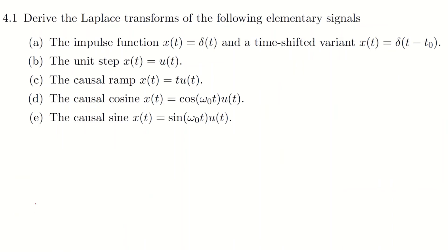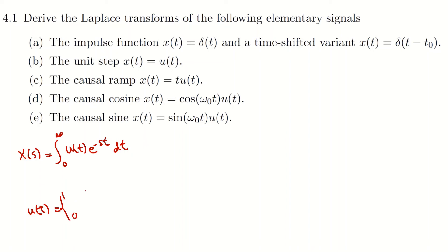So let's solve part b. We have the unit step: x(t) equals u(t). To calculate the Laplace transform, we take the integral from 0 to infinity of u(t) times e to the power of minus st dt. We know that u(t) is 1 if t is greater than or equal to 0, and 0 if t is less than 0. Since the integration limit is 0 to infinity, t is between 0 and infinity, so u(t) equals 1. We can replace u(t) by 1.